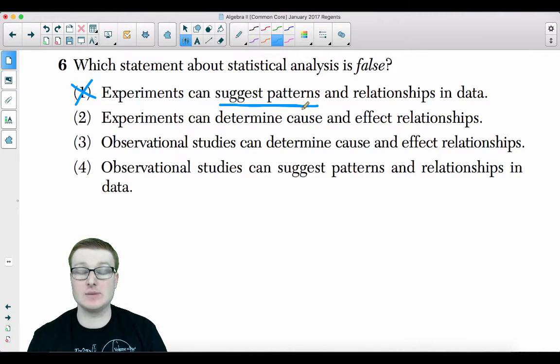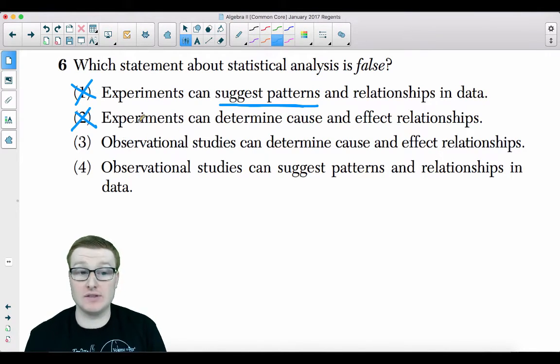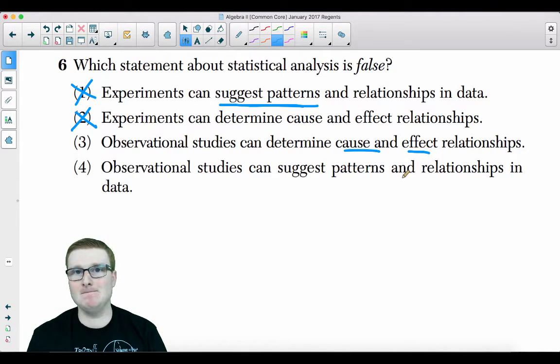Experiments can determine cause and effect relationships. Absolutely true. If you have an experiment, you're testing the difference between two variables. For example, if I said to you, let's experiment students who have an increased amount of time spent on their phone compared to their test scores, cause and effect relationships. As the amount of time you spend on that phone increases, your test score will go down. That's what experiments discover. Choice three, observational studies can determine cause and effect relationships. No, they can't.